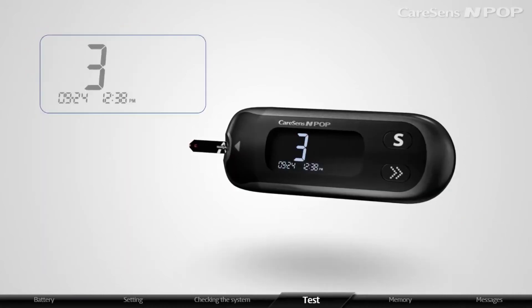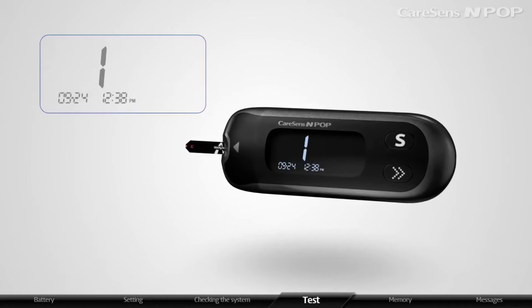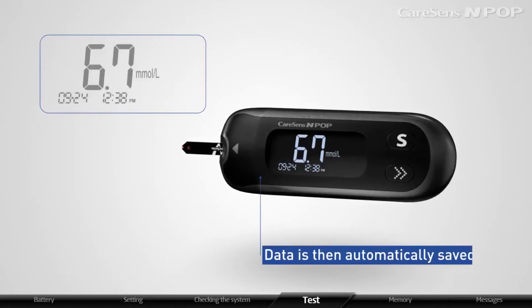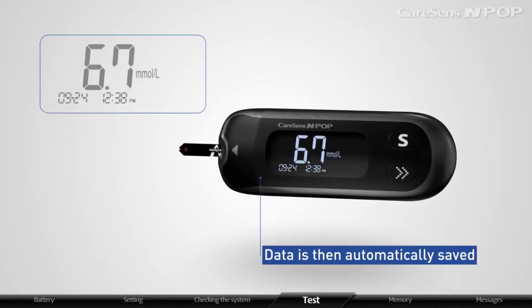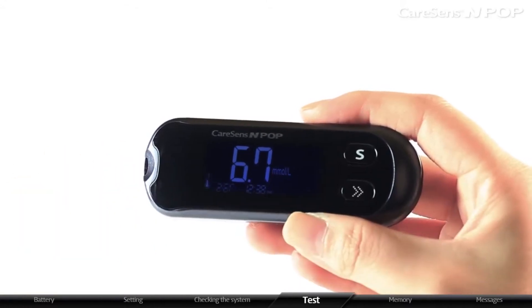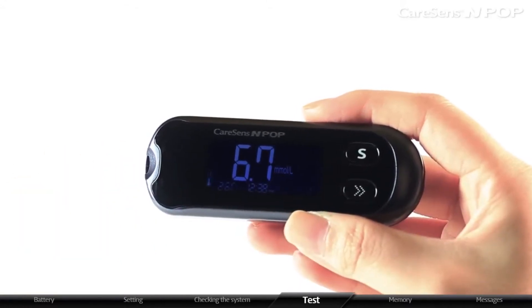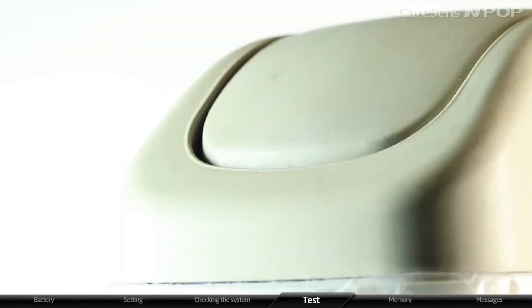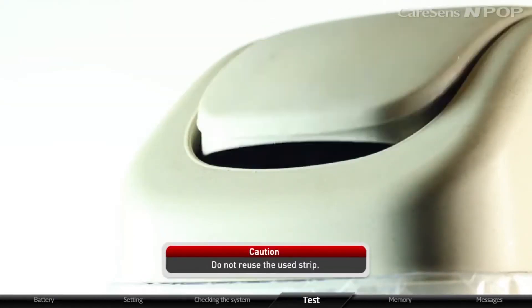Test results appear after the meter counts down for 5 seconds. Data is then automatically saved. Meter automatically turns off when the inserted strip is removed. Used strip must be discarded in a disposable container. Do not reuse the used strip.